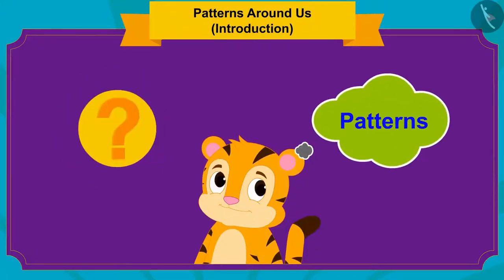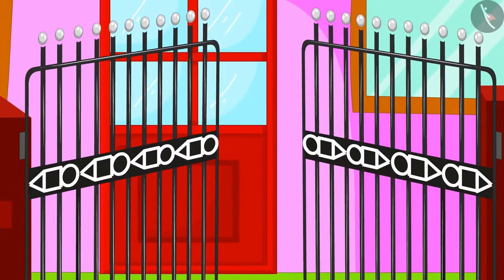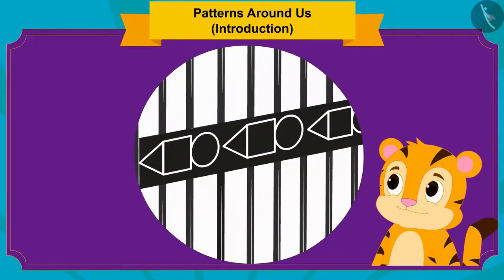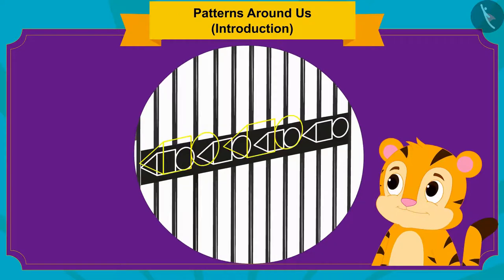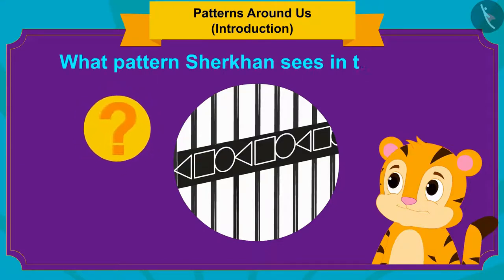Let's see what other patterns Sher Khan saw. There is a gate outside the shop from which Sher Khan went to buy cake. Sher Khan started thinking: oh wow, how beautiful is this gate! How many different shapes are made in it? Then Sher Khan looked at the gate more closely and thought, what is this? There is a pattern in this too. Children, can you tell what pattern Sher Khan sees in this gate?